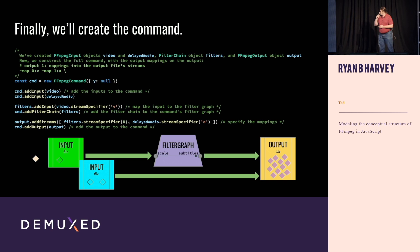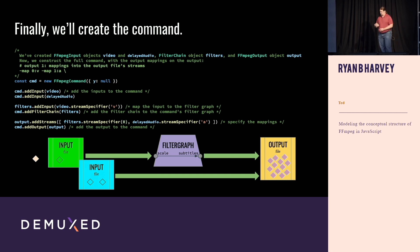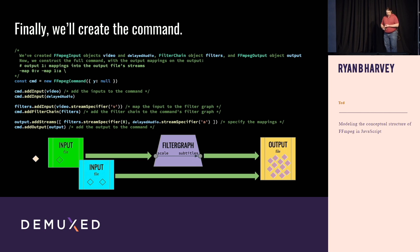Now we can construct the command. We create a command, put the global options on it, add the input for the video, add the input for the delayed audio, add the stream specifier for the video input into the filters — these are video filters — and then add that set of filters to the command, which implicitly adds it to the command's filter graph. Then we add streams to the output: the first output stream of the filters and the audio output stream of the delayed audio. Then we add that output to the command, and we've constructed a full, complete command.